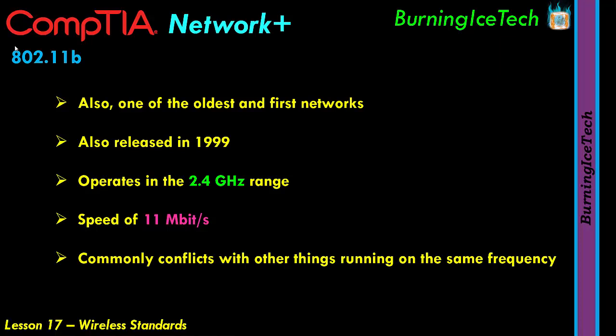For example, the exam might ask: a user at a company complains that the Wi-Fi keeps going down during lunchtime — what could be a possible reason? One of the four answers will be something along the lines of microwave oven. It runs at 2.4 gigahertz, and people like to heat up their lunch during lunchtime. That's an actual question in the exam.